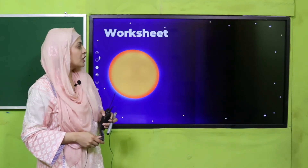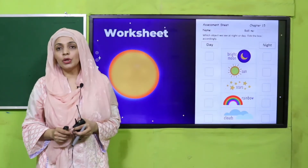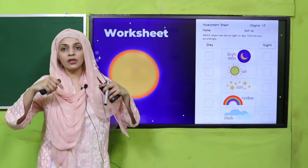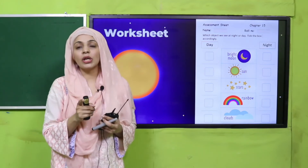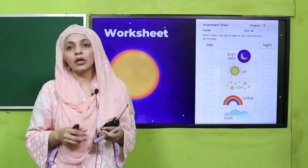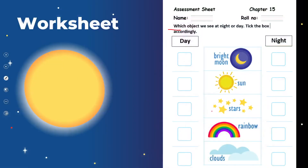Practice time hai — worksheet aapko karni hai. This is the worksheet that you will do. You can download this worksheet from the description box below this video, or you can get it in print form from your teacher. Write down your name and class, then start working on this sheet. Which object do we see at night or day? Tick the box accordingly — bright moon: night time; sun: day time; stars: night time; rainbow: day time; clouds: both times.